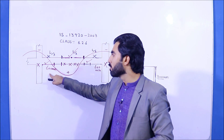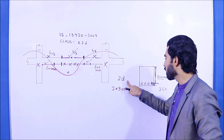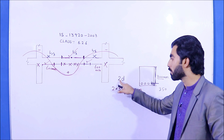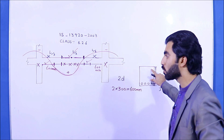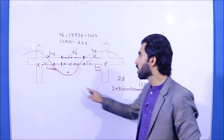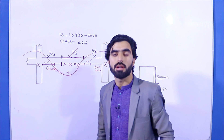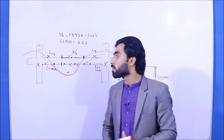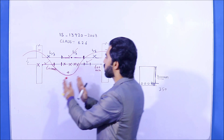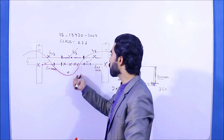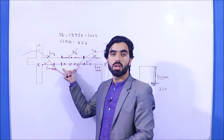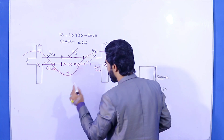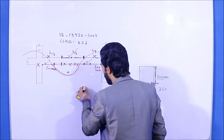To summarize: at the bottom, use the 2d formula — multiply the effective depth by 2 to get the distance from the junction after which lapping is allowed. For example, if effective depth is 400 mm, then 2d = 800 mm; if it is 300 mm, then 2d = 600 mm. Provide lapping length after that distance. At the top, lapping is allowed at L/3 from the junction, not at the support itself.